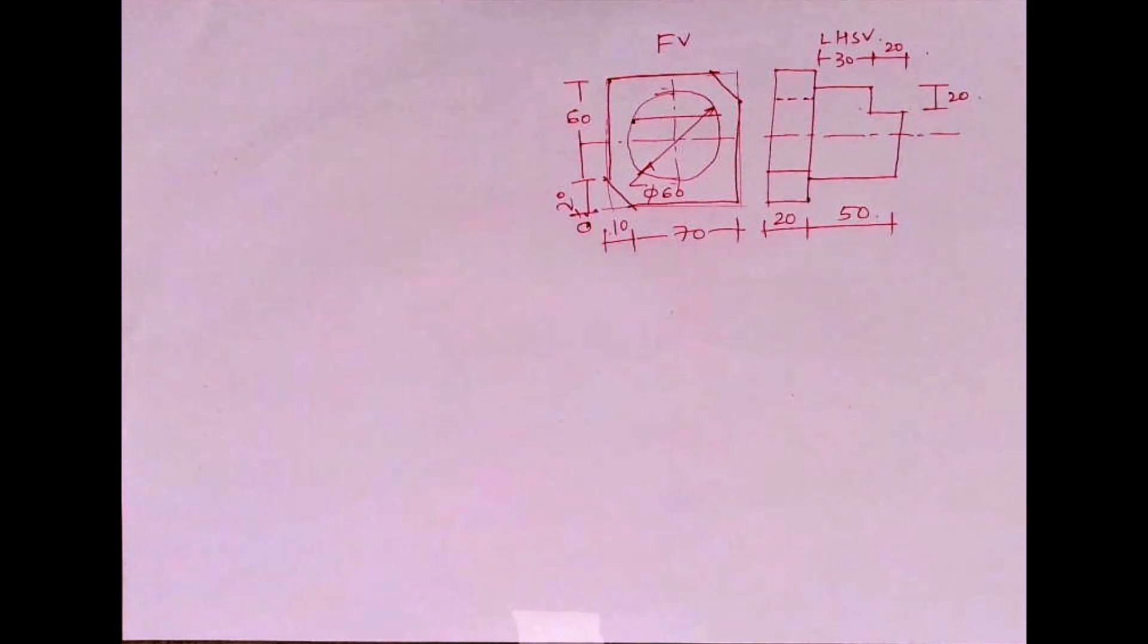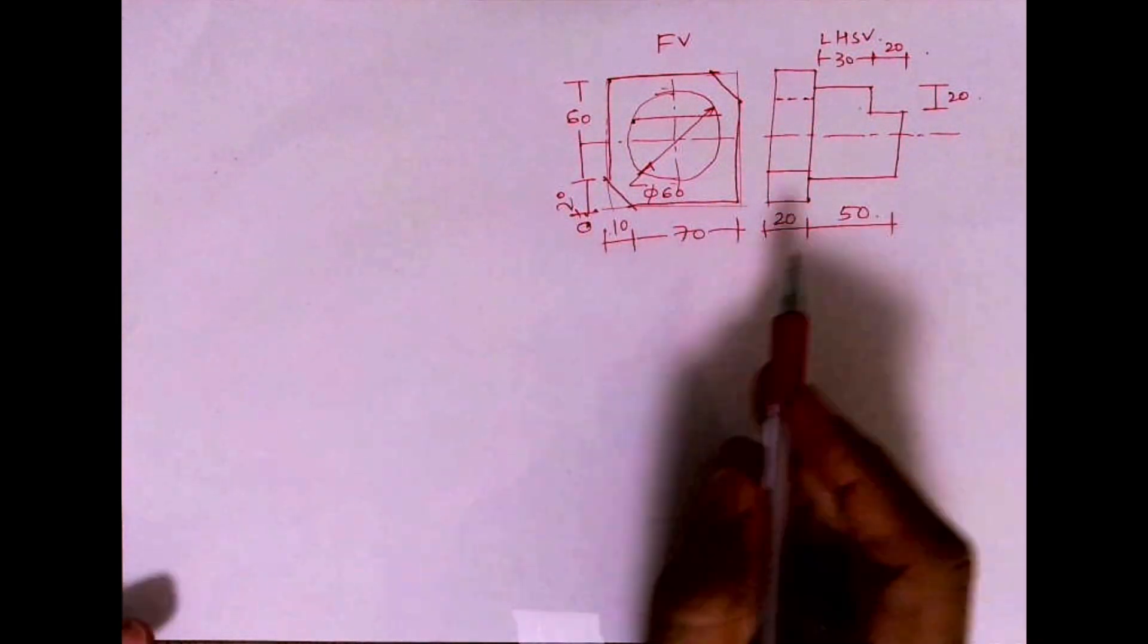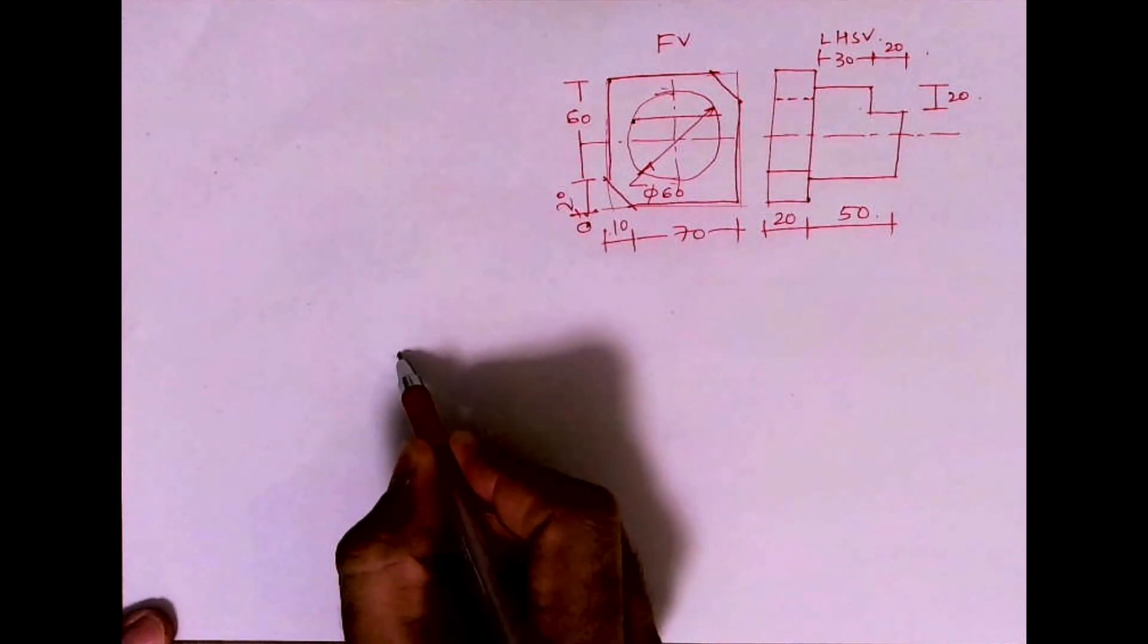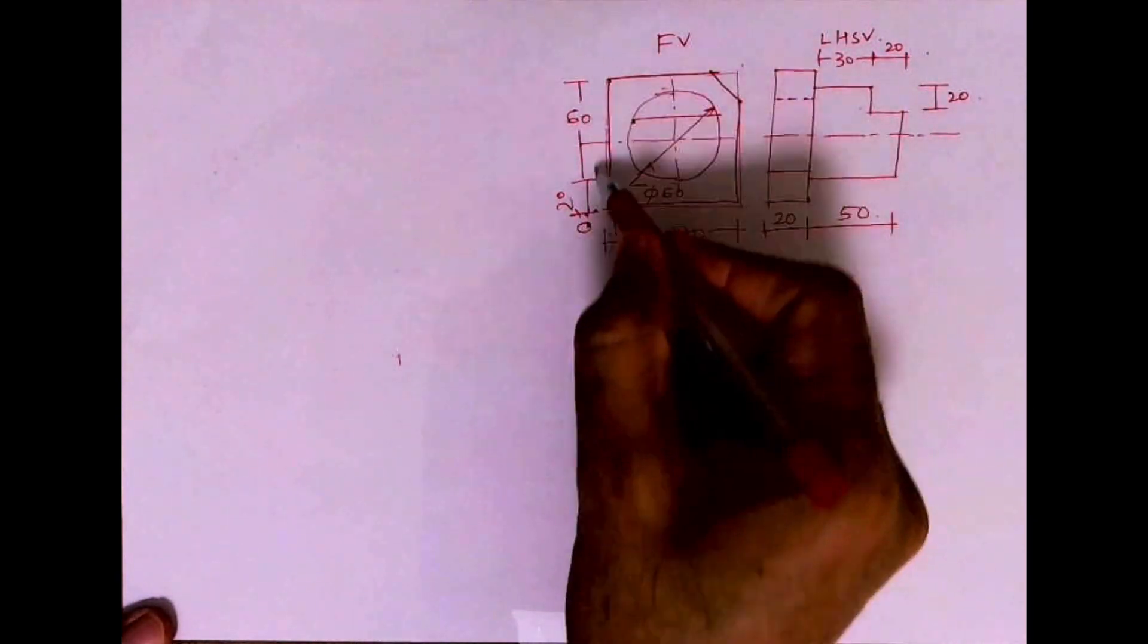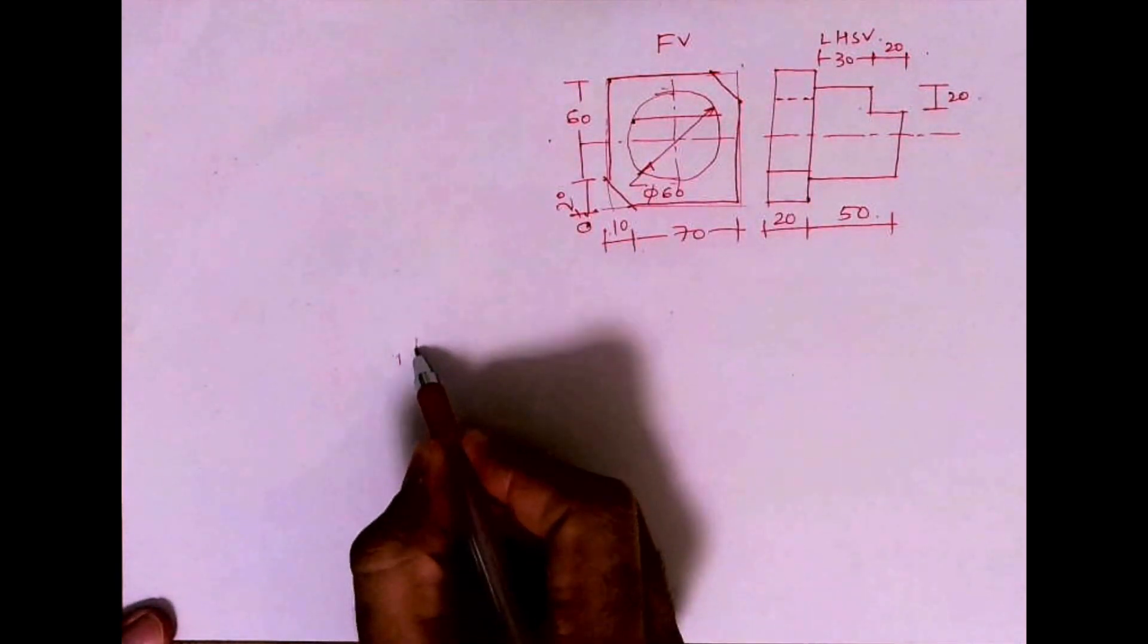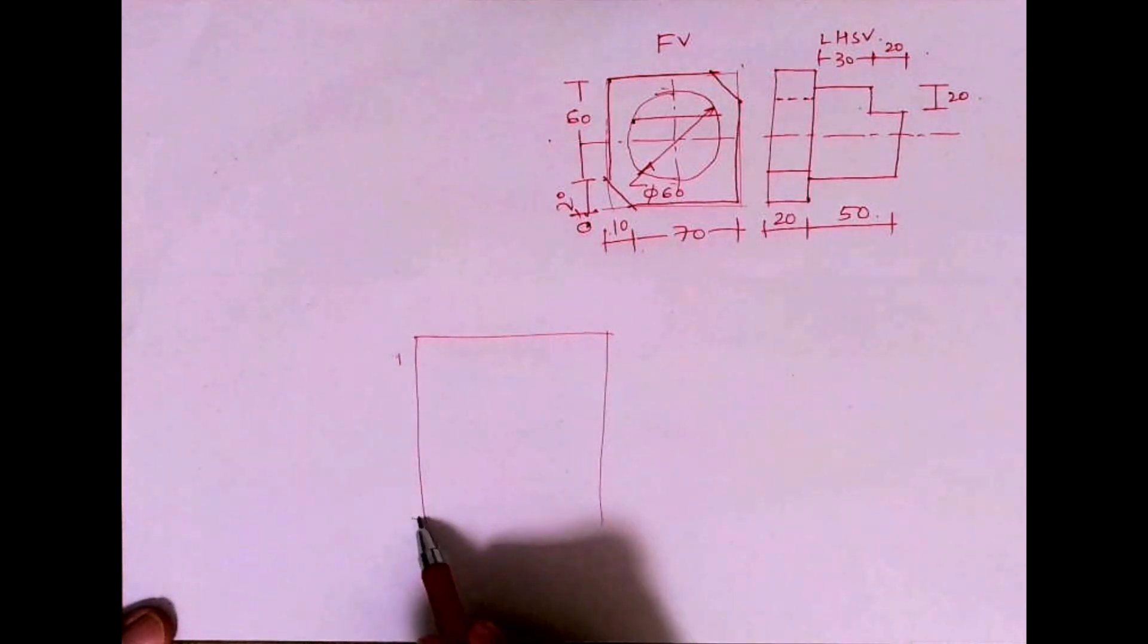Welcome to technical drawing. Today we'll see this sum in oblique. They have given front view and side view. Length is 80 and height is also 80, so first I will draw a square of side 80.